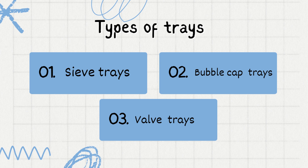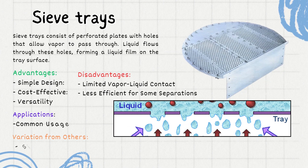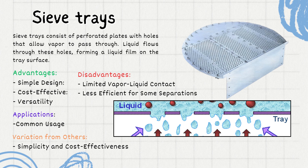Now let's look at the first type of tray: the sieve tray. Sieve trays are constructed with perforated plates featuring holes that allow vapor to pass through. As you can see in the photo of a sieve tray on screen, the perforated holes allow vapor to pass through and make contact with the liquid. A liquid film is created on the surface of the tray, and from the perforations, vapor is led upward, creating vapor-liquid contact on the plate.